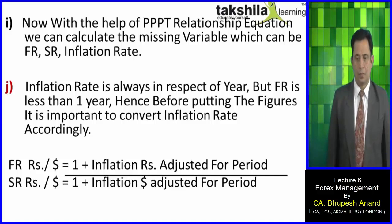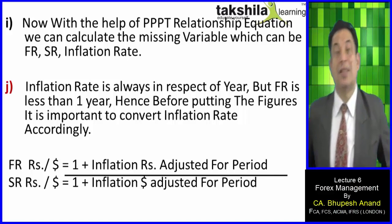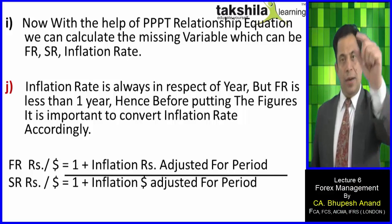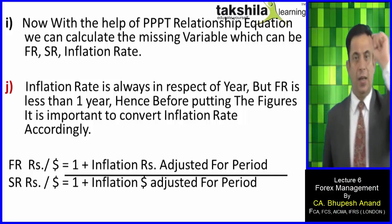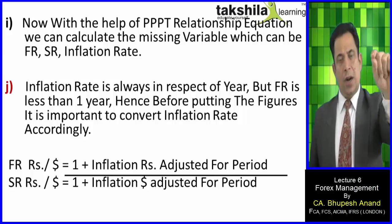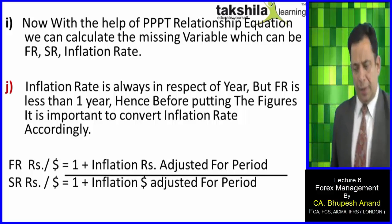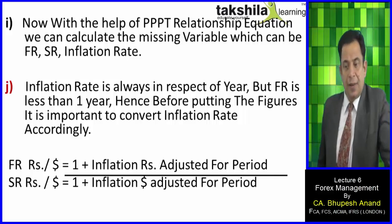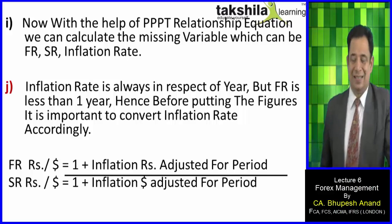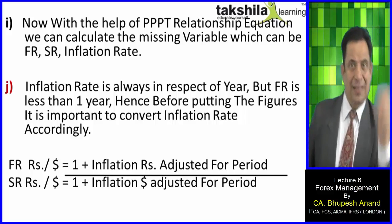With the help of the PPPT relationship, we can calculate the missing variable — it could be the forward rate, the spot rate, or the inflation rate. Inflation rate is always in respect of a year, but the forward rate can be for less than one year.